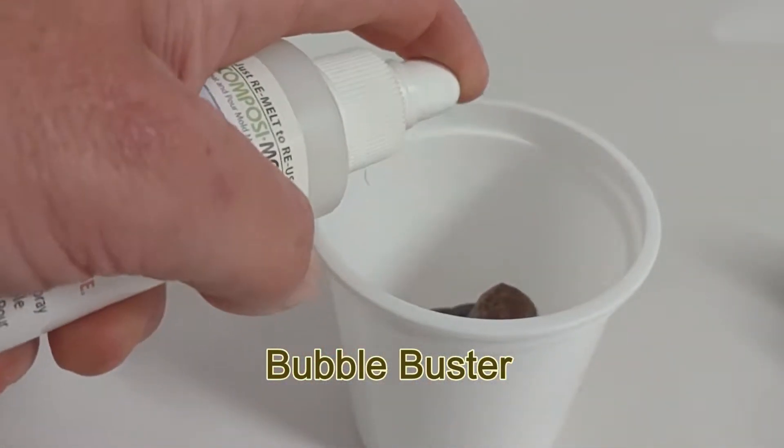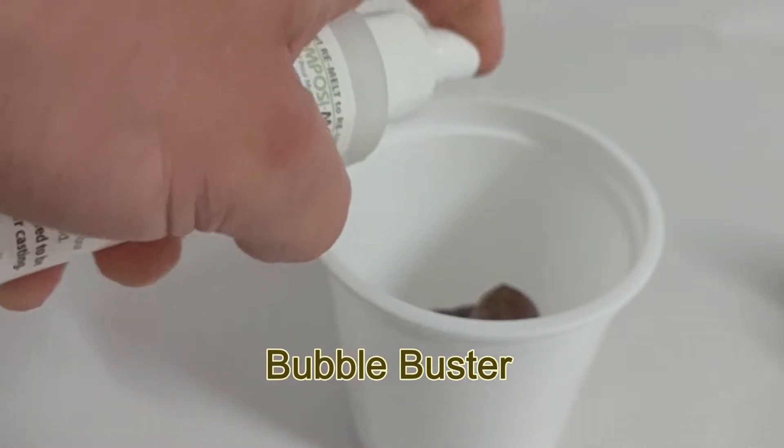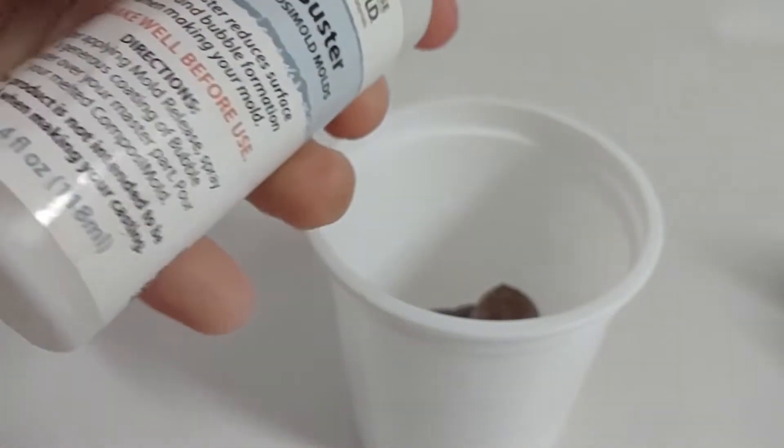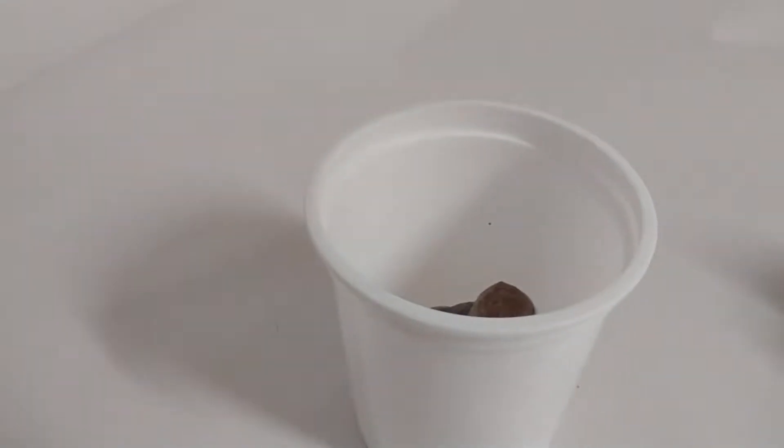Spray your object with a little bit of bubble buster to reduce surface tension so that the bubbles don't stay on the surface of the part when you pour in the Composite Mold.